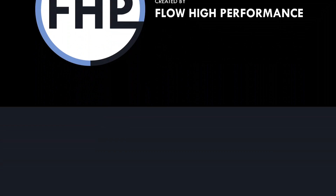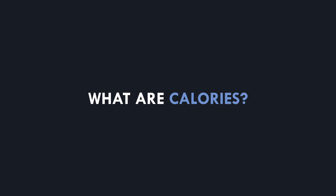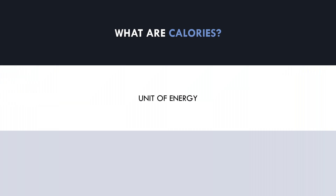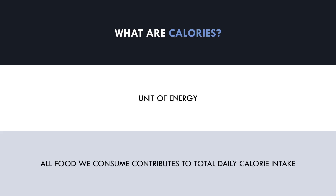First and foremost, let's establish what calories are. Calories are simply a unit of energy that we use to quantify energy intake. There are also other units that can be used to quantify energy, like kilojoules, which measures the same thing but is just a different unit. Each food that we eat contains a certain number of calories, and all the food we eat collectively in the day contributes to our total daily calorie intake. This total daily calorie intake may be consumed over a different number of meals or at different times, but this video will discuss the influence of the total daily intake on body composition.